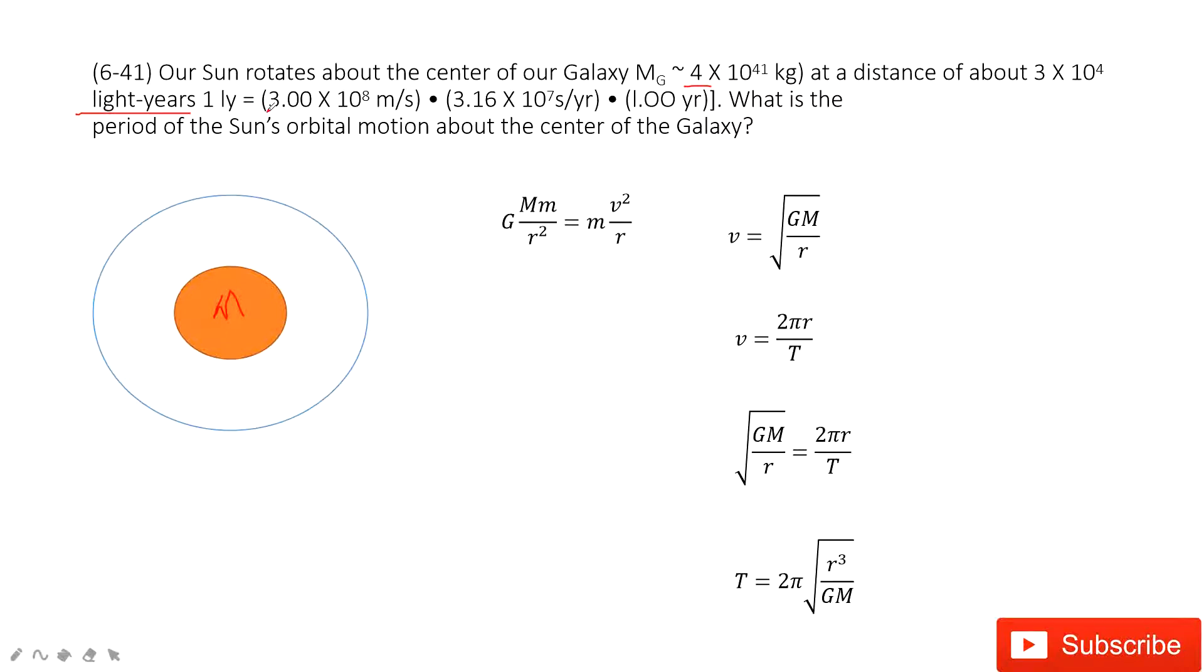So first we consider the light speed. It is this one, right? This is light travels this meter per second. Then how much time it traveled? One year. So one year is this second. Then you can get the value - one light year in unit meter.